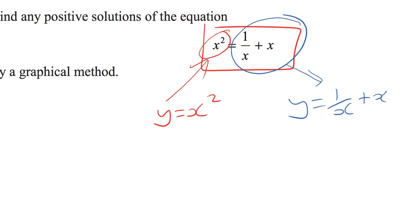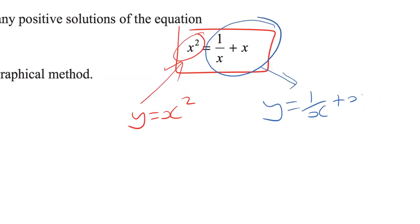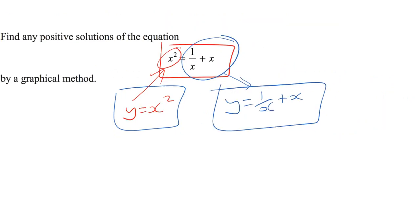Now, if I can find the point of intersection of those two graphs, those x coordinates of that point of intersection are going to be where x squared is equal to one over x plus x, and that's going to help me to solve my original question. So in summary, what I'm going to be doing is plotting these two graphs, looking for the intersection point, and then we're just going to read off those answers, nice and simple.